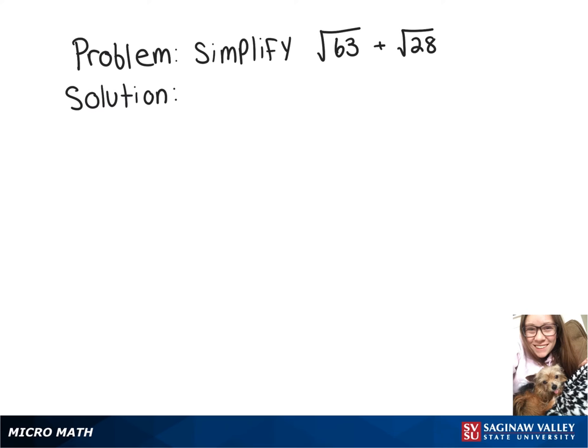We're going to simplify the square root of 63 plus the square root of 28, so we need to think about perfect squares that are multiples of those numbers. So 9 is a multiple of 63, and 4 is a multiple of 28.